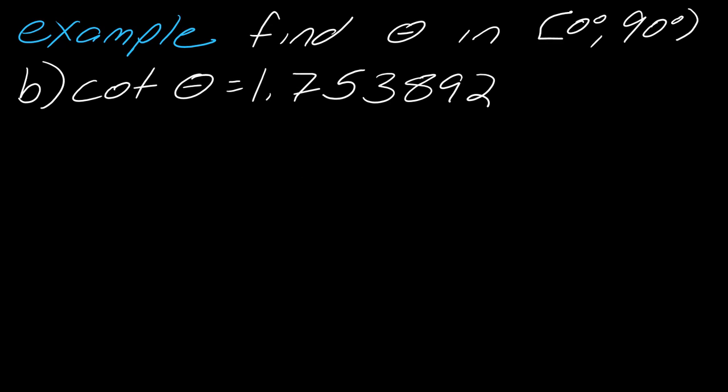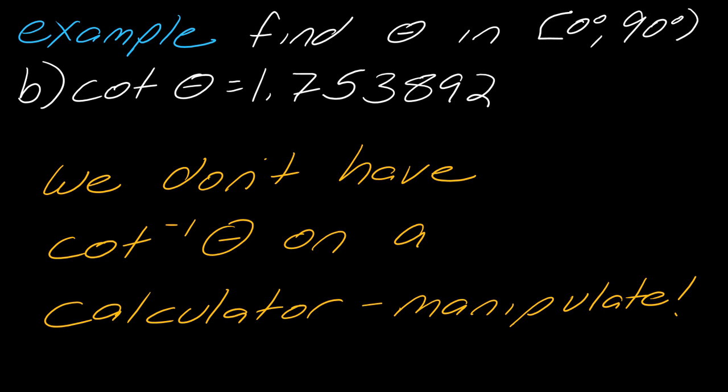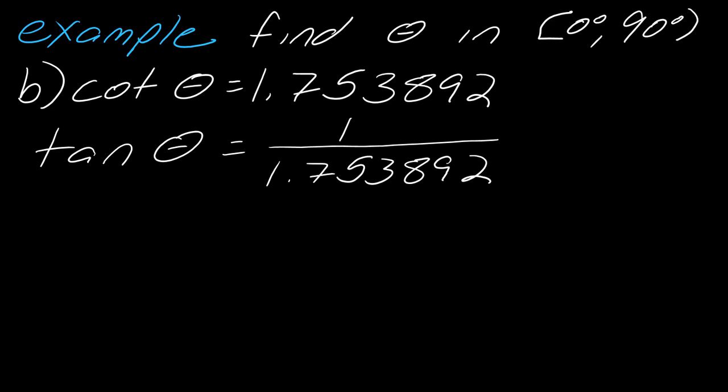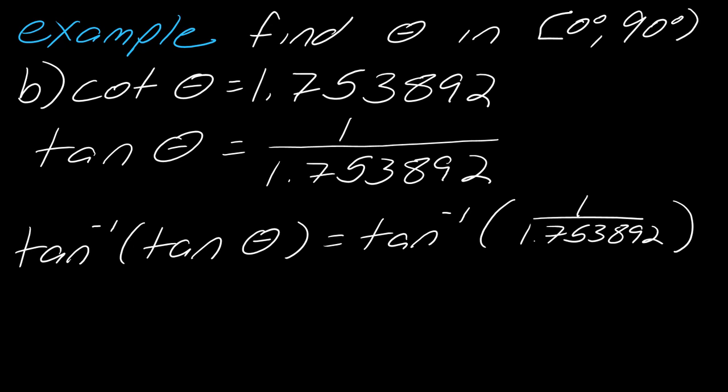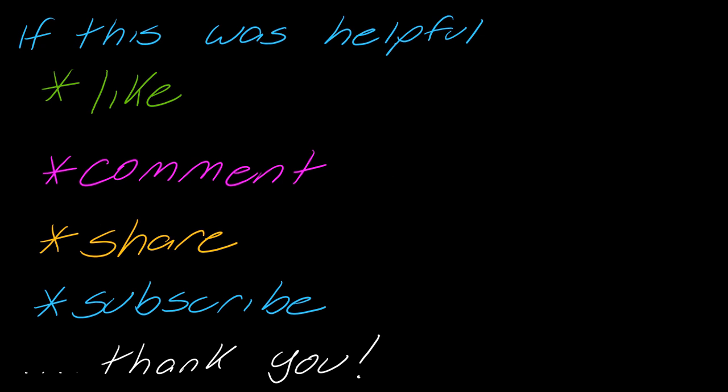Alright, so I've also got cotangent of theta equals 1.753892. Now, you'll notice that we don't have an inverse cotangent on the calculator. So, once again, we have to manipulate. So, to manipulate this, I just write it as the inverse. That's it. So, I've got tangent of 1 over that number. And now, I can go ahead and I can take inverse tangent of each side, plug that in my calculator. I get 29.69 degrees. And so, that's it.